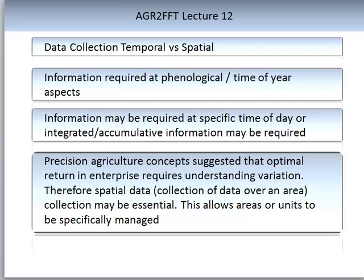When considering network connectivity and sensor components, you need to look at the temporal and spatial characteristics of your system — this is particularly pertinent in agriculture. From a temporal perspective, information is often required at a phenological time of year or time of day; measurements may need to be integrated or cumulative. From a spatial perspective, you need to ensure your sensor captures the variation needed to link your output with your optimal return. This is where the field of precision agriculture has developed from.